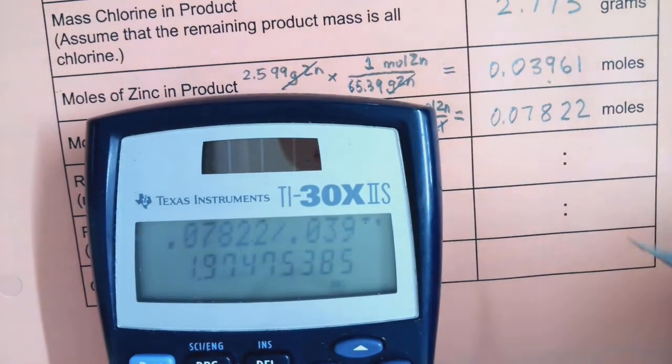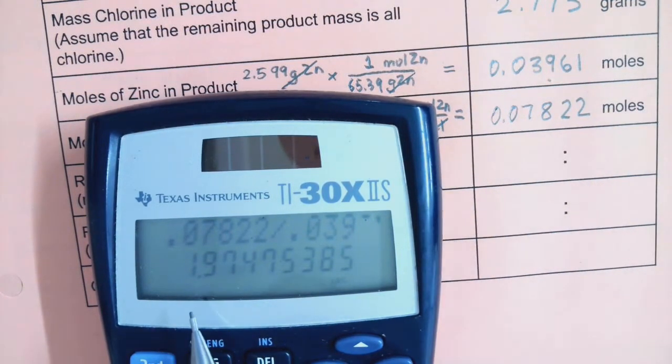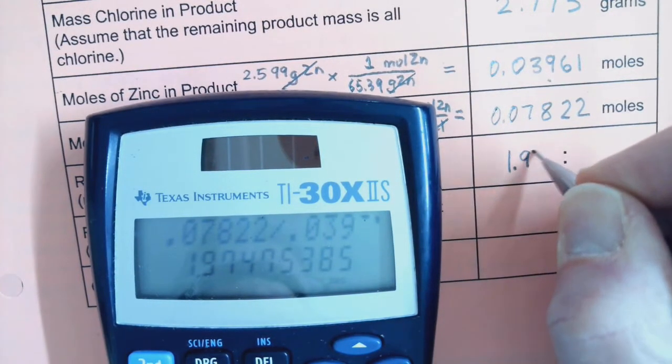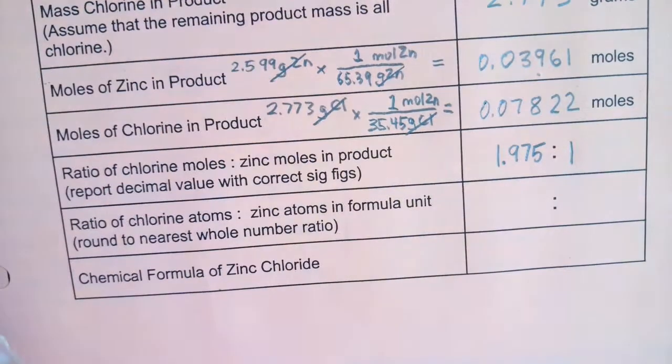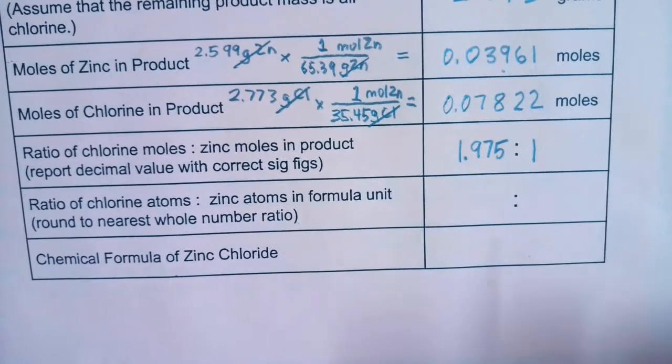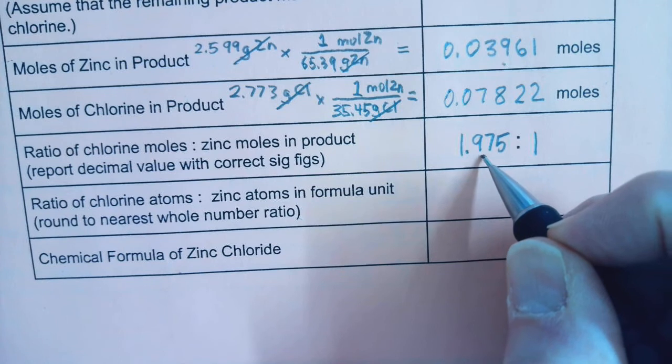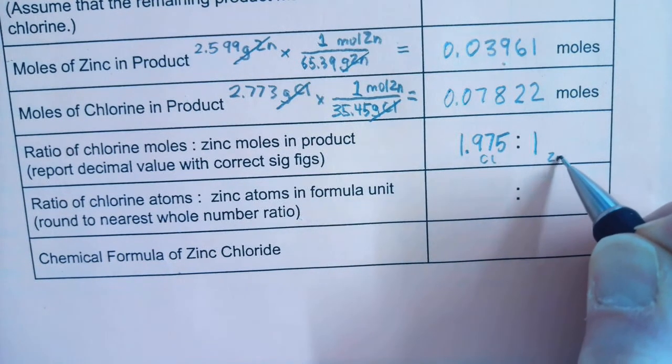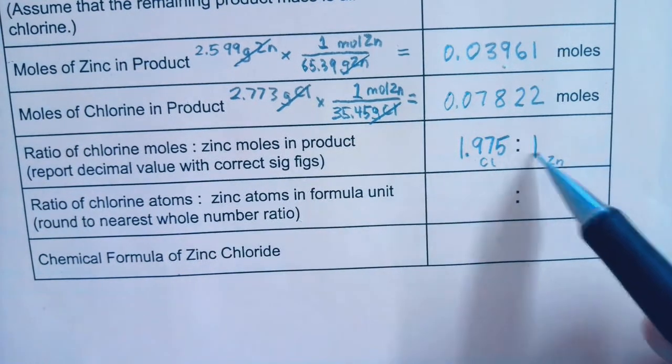And if I keep four digits, again, I'm taking the bigger value compared to the smaller value, I'm going to keep 1.975 to 1. Because I've divided that out next to each other. So that is the chlorine amount of moles as it compares to the zinc amount. Very close to a two-to-one ratio. So this is actually quite a good result.